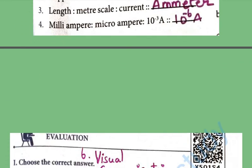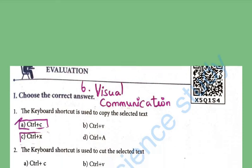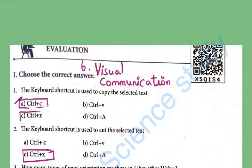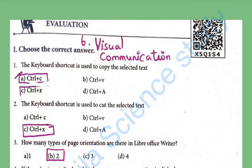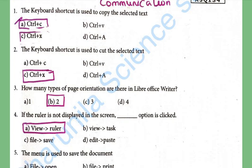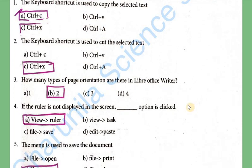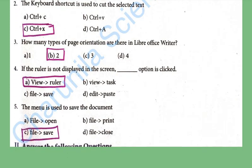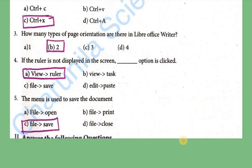Next, the last lesson: Visual Communication. The keyboard shortcut used to copy selected text is Ctrl+C. The keyboard shortcut to cut selected text is Ctrl+X. There are 2 types of page orientation in LibreOffice Writer. If the ruler is not displayed on the screen, click View > Ruler. The menu used to save a document is File > Save.